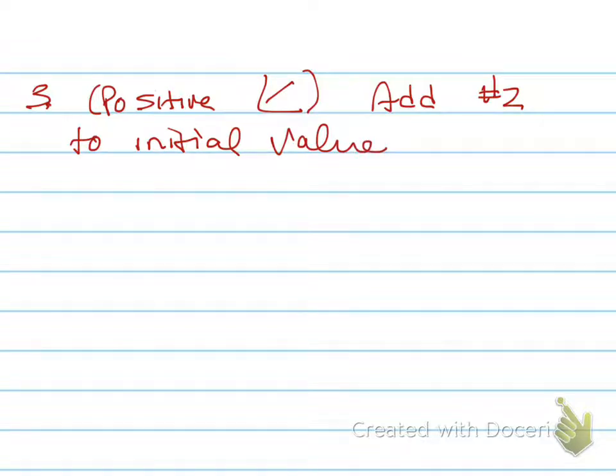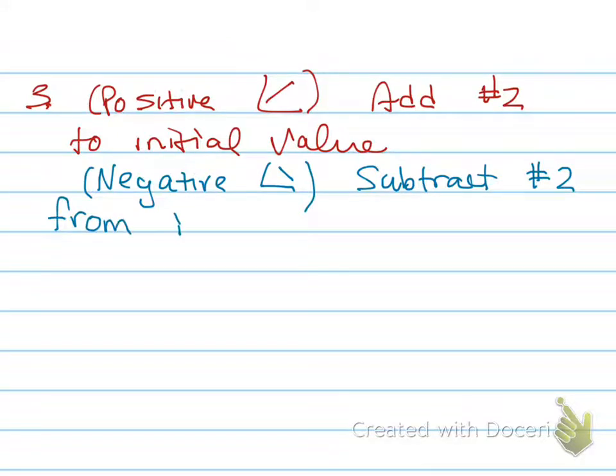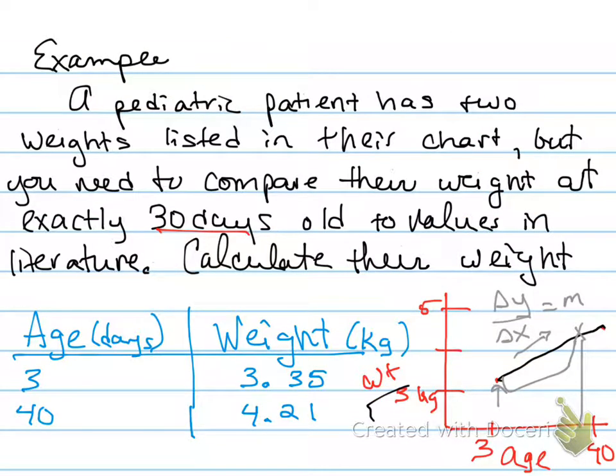If we had a negative correlation, then you would actually be subtracting it. So it's a graph that looks kind of the opposite of this one. If you got that, then you would subtract your answer from number 2 from the initial value. You can always double-check yourself by comparing the initial and final numbers. So for example, if I took 3.35 and I subtracted it, it would be less than the child initially weighed, which would put the number down here somewhere. So that doesn't make any sense. We can only interpolate between the two data points.